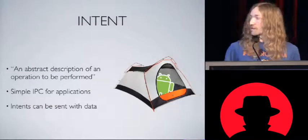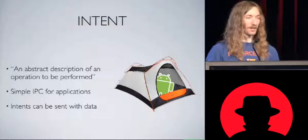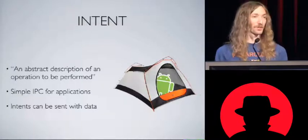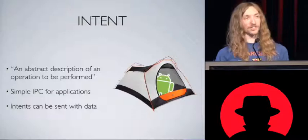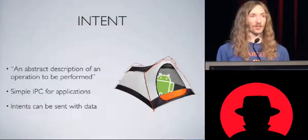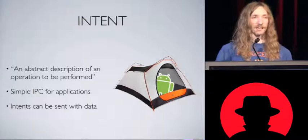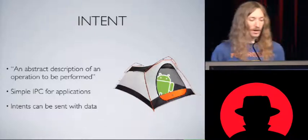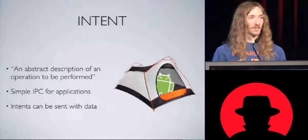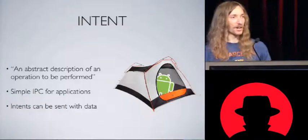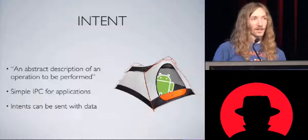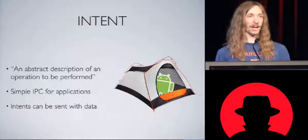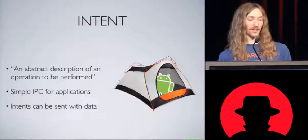Android intents are basically — in the documentation it says — an abstract description of an operation to be performed. This is essentially a simple data structure of an action and data associated with that, passed in the form of a URI. We use this as low-overhead IPC between applications so that we can say, hey, we want to start a browser and here's a URI, or we want an action view and here's some content data.